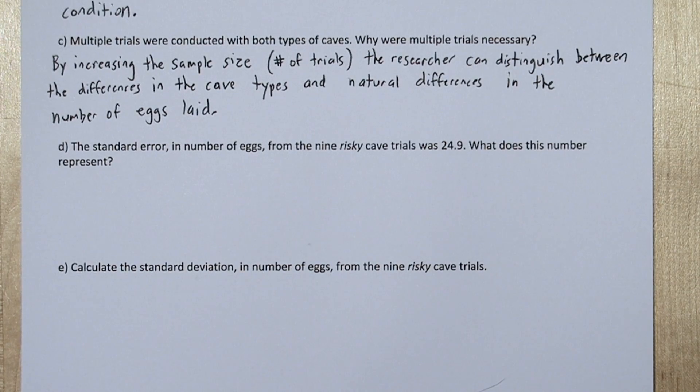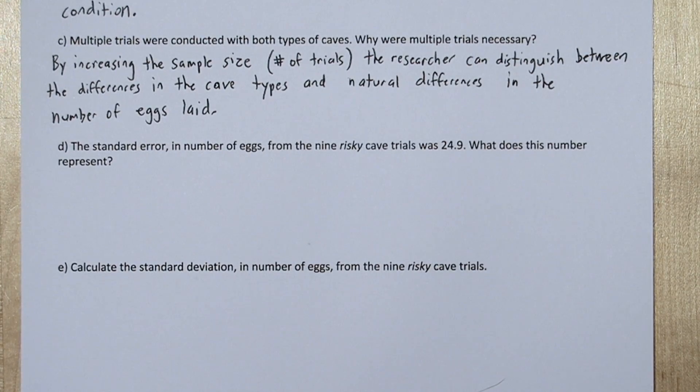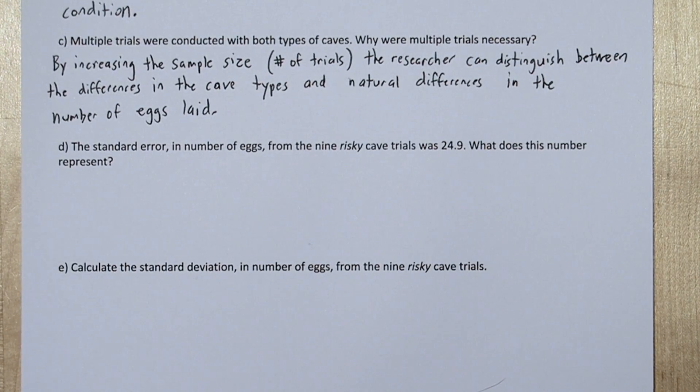In a sense, replication balances the low egg number batches with the high egg number batches, and really focuses on what variation is being caused by the cave type.